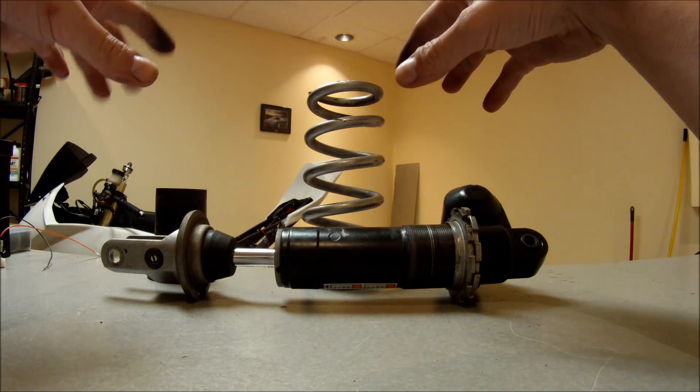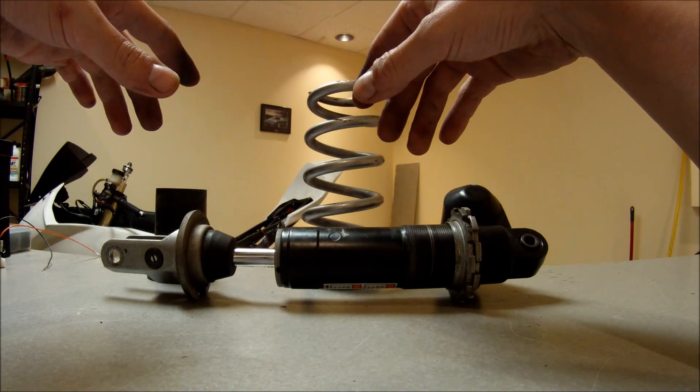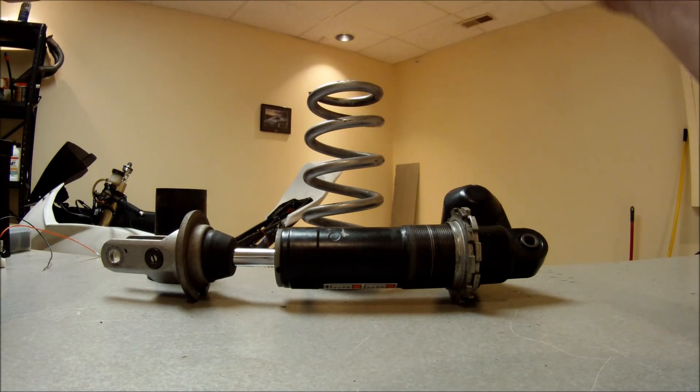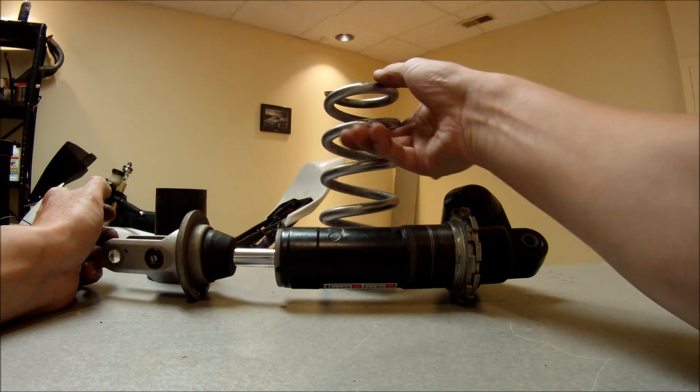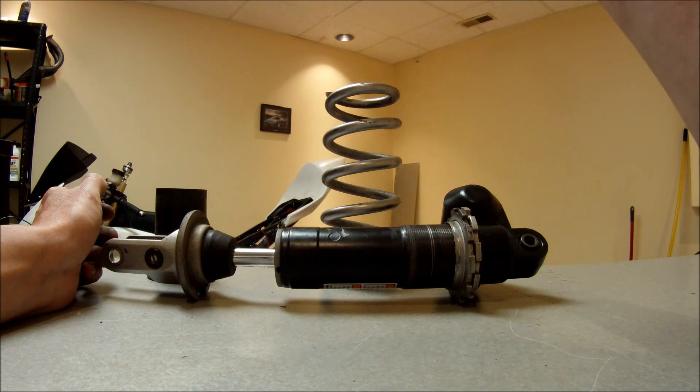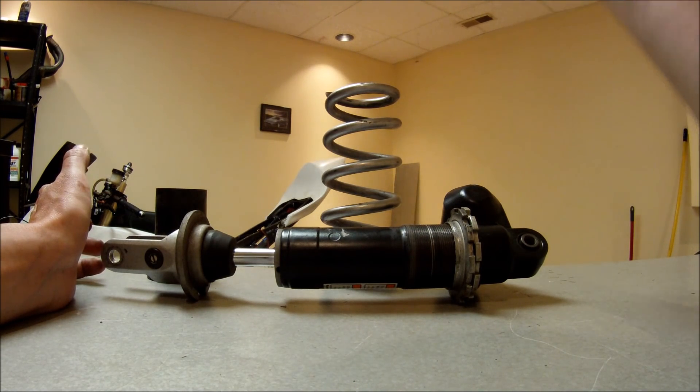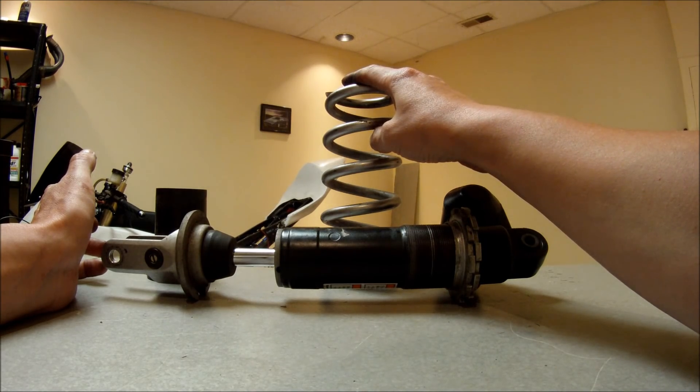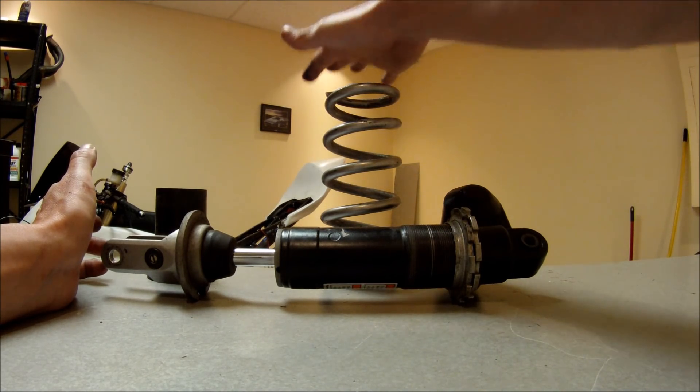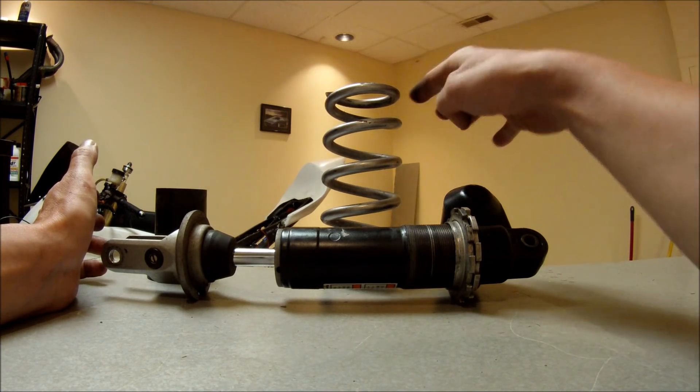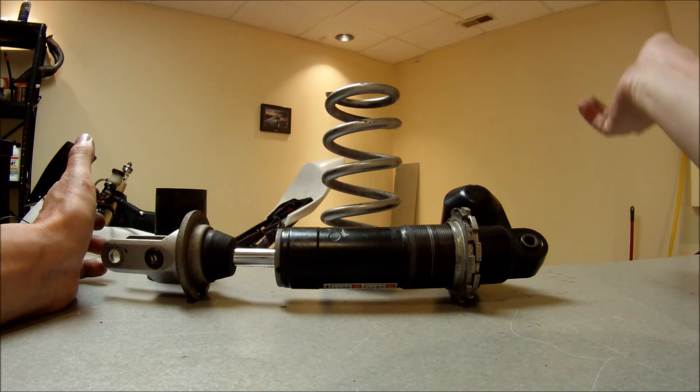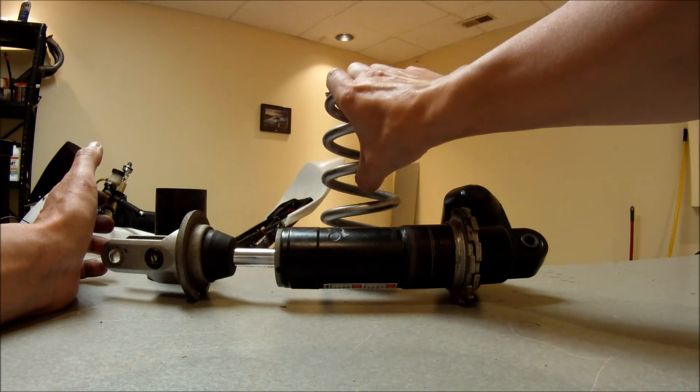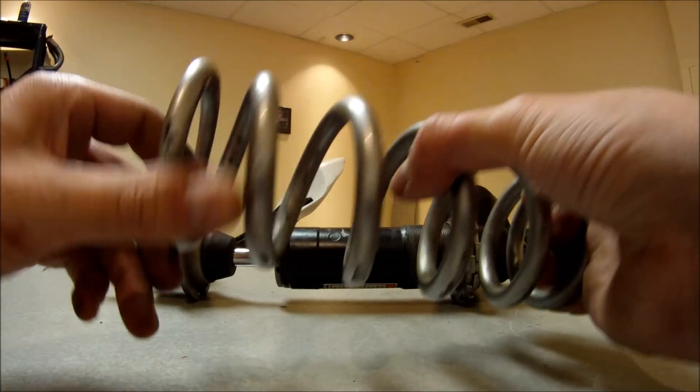If you're comfortable with pounds per inch, just keep using that. If you like kilograms per millimeter, go with that. But most people I deal with usually use pounds per inch. Sometimes they'll say 'I need a 450 pound spring,' which means they need a spring that's 450 pounds per inch. If you put 450 pounds of weight on the spring, it'll compress by one inch. If you put 900 pounds, it'll compress by two inches.